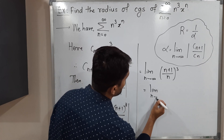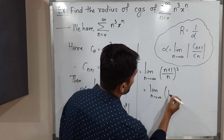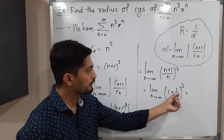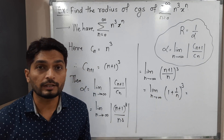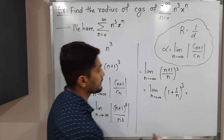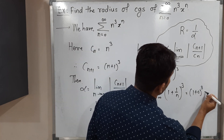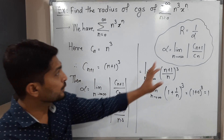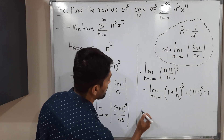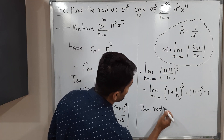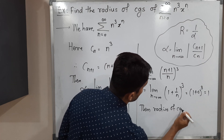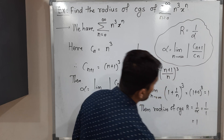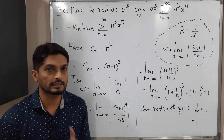Dividing separately, this becomes the limit as n tends to infinity of (1 + 1/n) cubed. Applying the limit, as n goes to infinity, 1/n goes to zero, so the value is (1 + 0) cubed, which equals 1. This is the value of alpha — not the radius of convergence. Using this alpha, the radius of convergence R equals 1 over alpha equals 1 over 1 equals 1. So the radius of convergence of the given power series is 1.